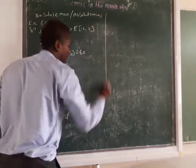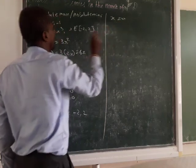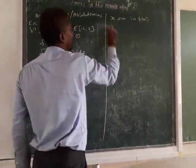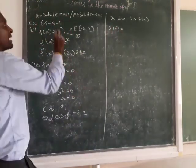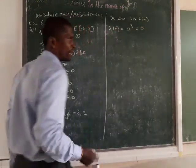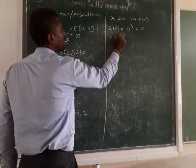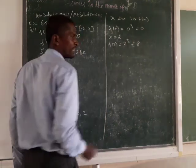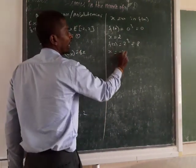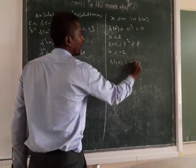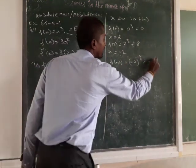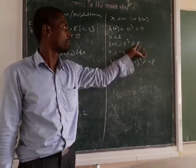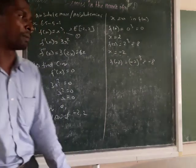To find the maximum and minimum, put x equal to 0 in f of x. So f of 0 equal to 0 cubed equal to 0. Then put x equal to 2: f of 2 equal to 2 cubed equal to 8. Then substitute x equal to minus 2: f of minus 2 equal to minus 2 cubed equal to minus 8. Comparing the three values — 0, 8, and minus 8 — so 8 is the absolute maximum value and minus 8 is the absolute minimum value.